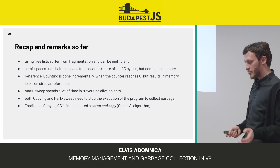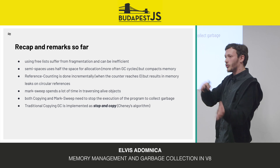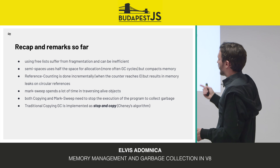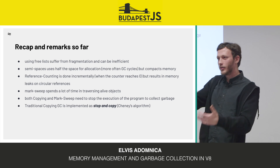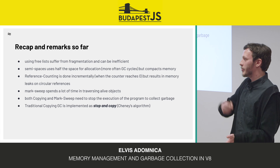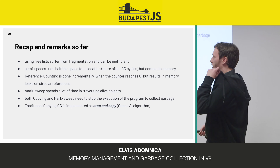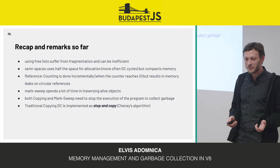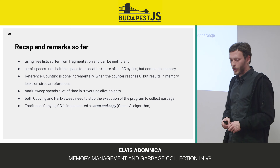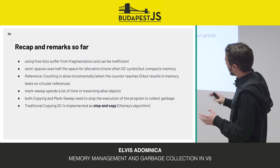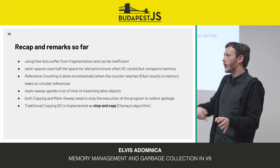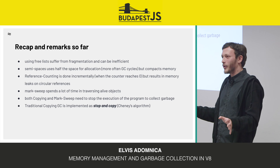Recap: using free lists leads to fragmentation. Semi-spaces are nice — by definition they compact because you're just copying from one side to another. But the problem with semi-spaces is that you've halved the allocatable area. If you have two gigabytes, now you only have one gigabyte, so you need to collect more often. Reference counting is nice but leaks memory. Mark and sweep spends time traversing live objects. In traditional approaches from the 90s and early 2000s, you actually need to stop the program from executing when you collect — stop the world — because otherwise the program will start messing up your collection.